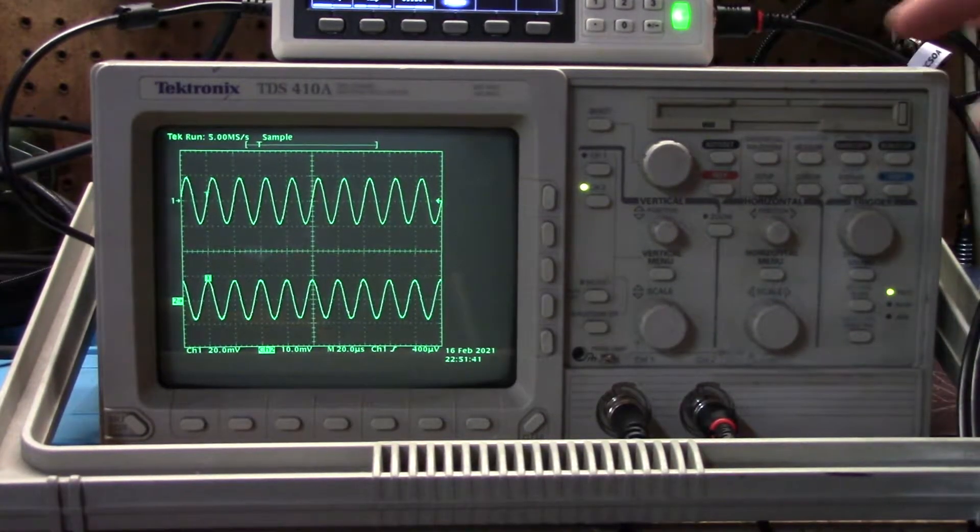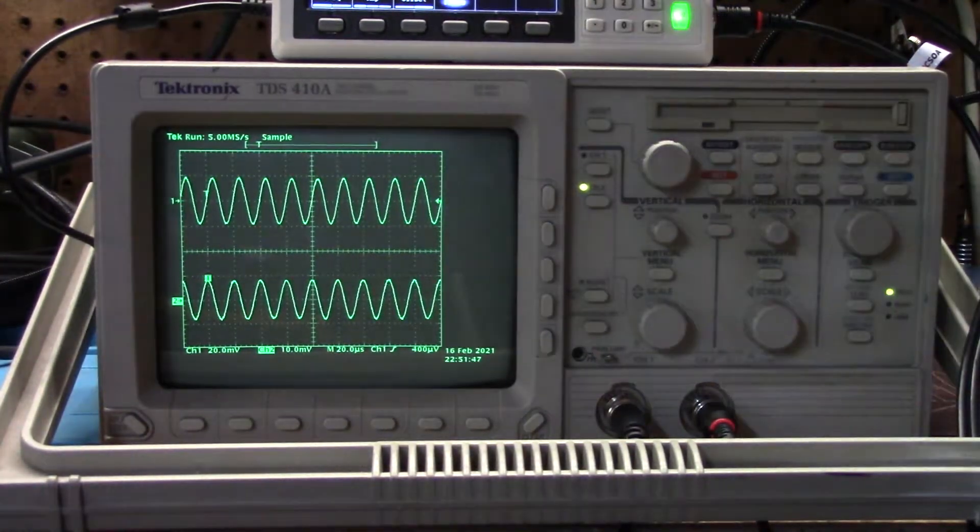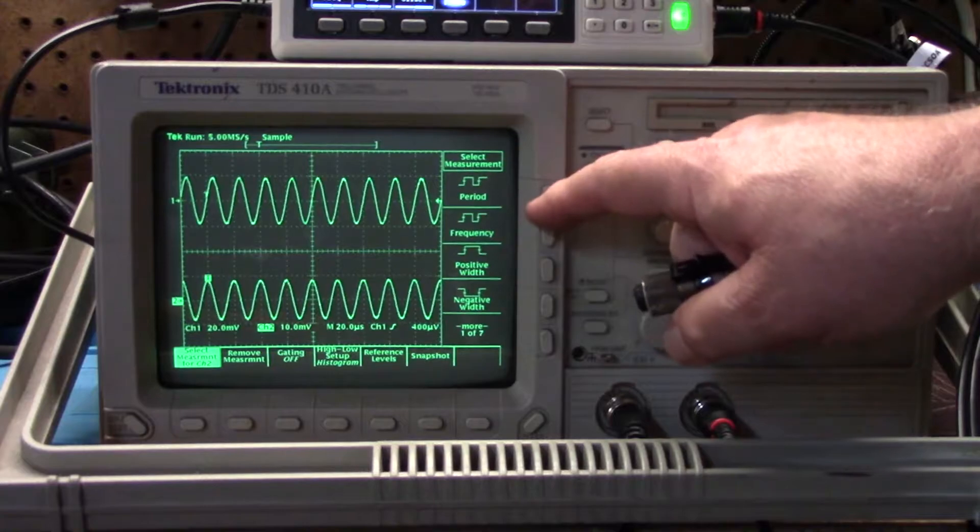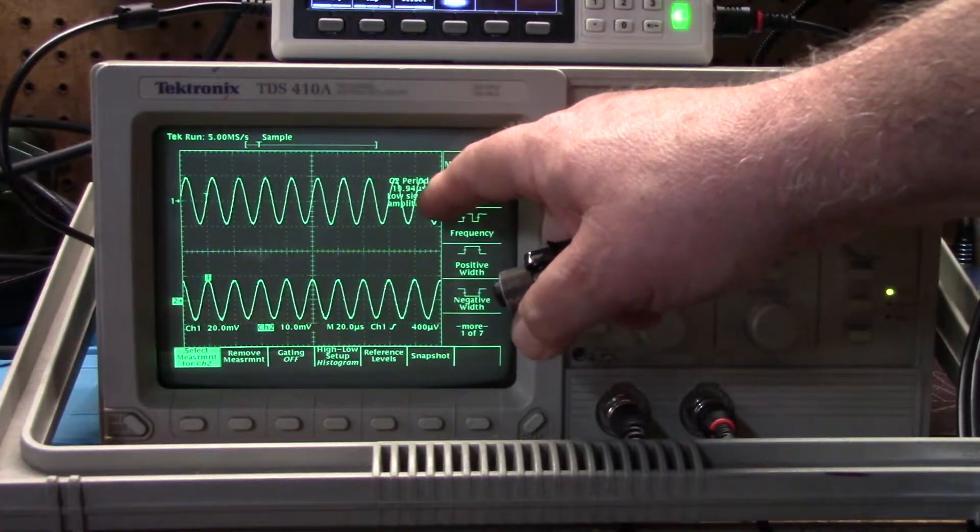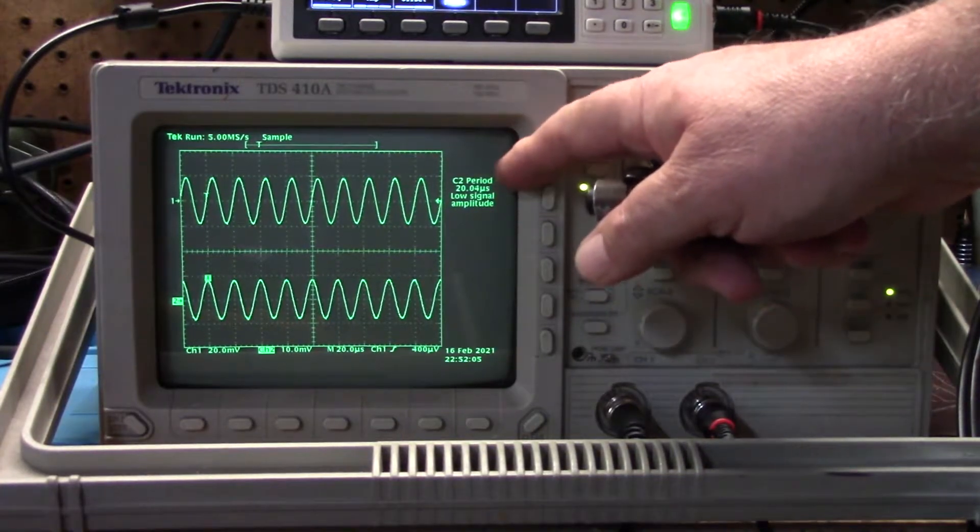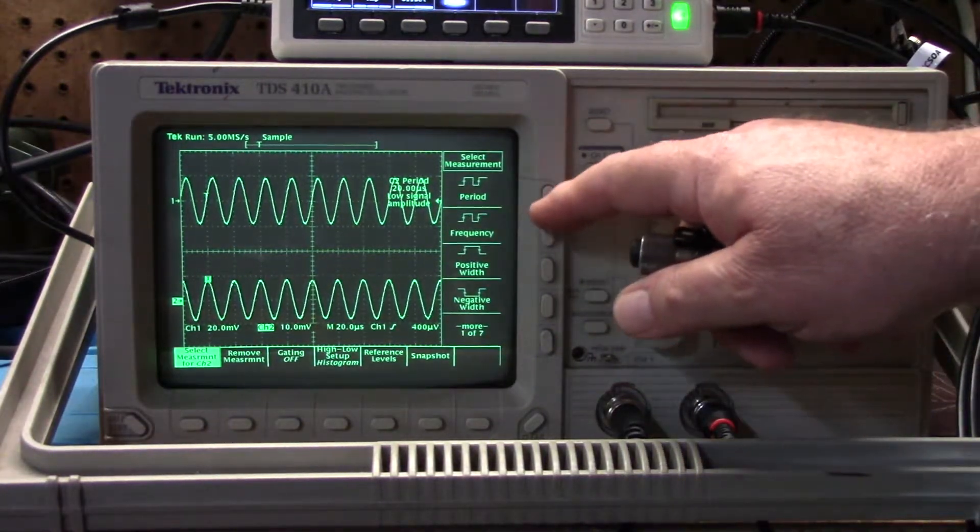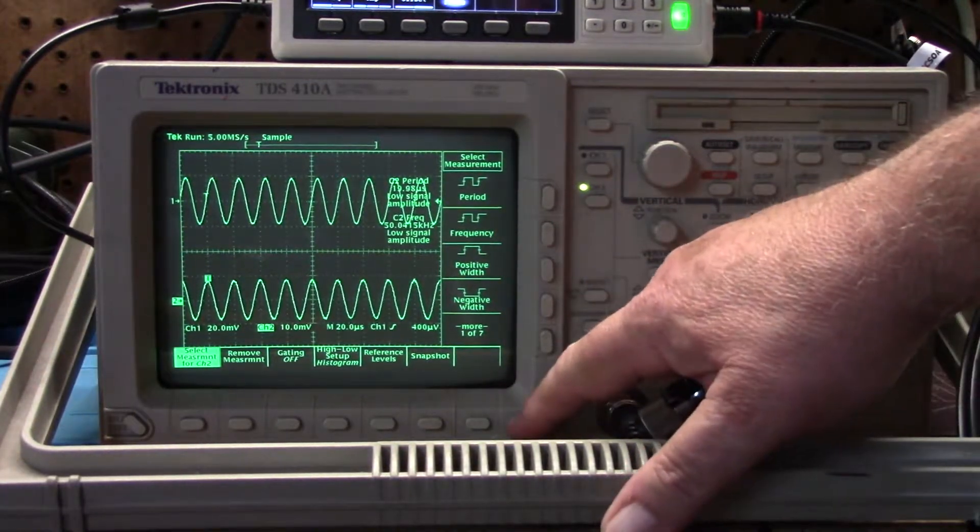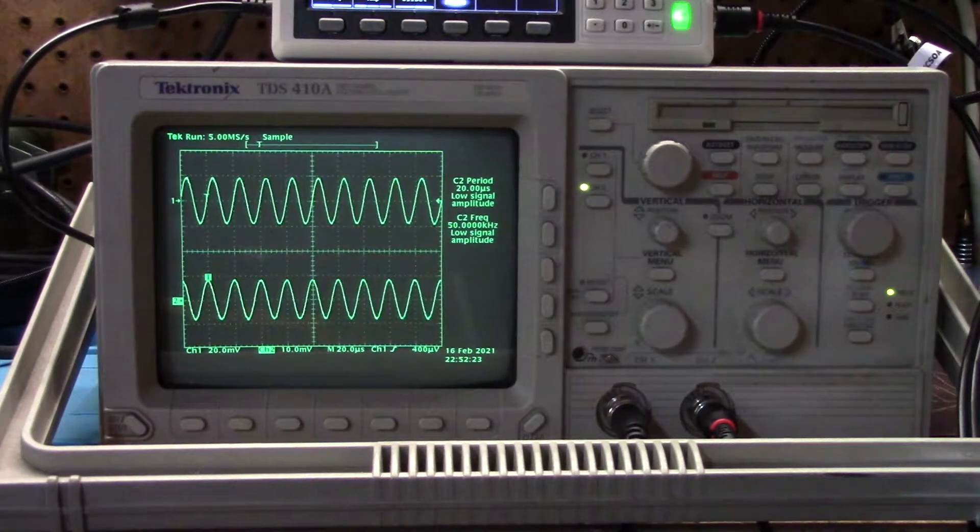The scope can of course save and recall our waveforms. It can perform measurements, so we can select a given measurement. It will hold up to four measurements at a time and you can see there's our measurement. Now if I clear the measurement menu it moves my measurement over here to the side where I can see it specifically. I can go back to measurements and let's add in another one, let's add frequency.